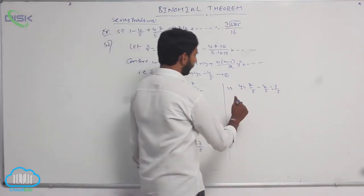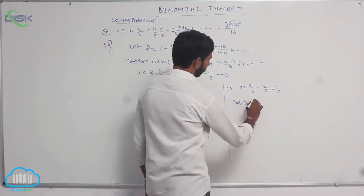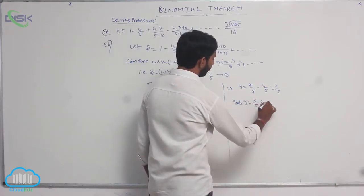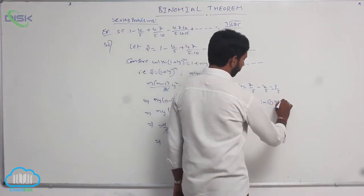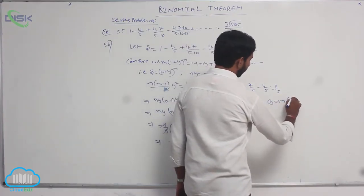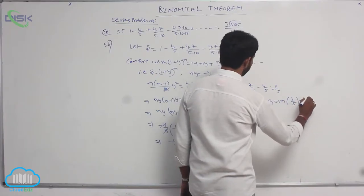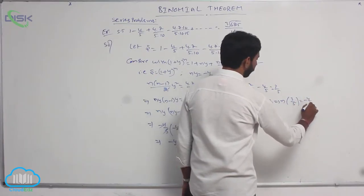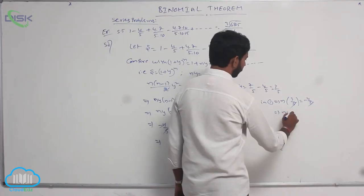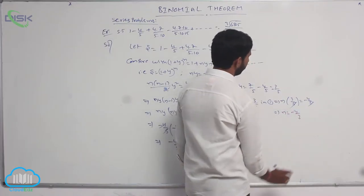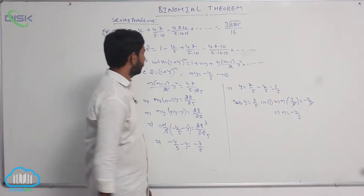Substituting y = 3/5 in condition number 1: n · (3/5) = -4/5. Here 5 gets cancelled, giving n = -4/3.